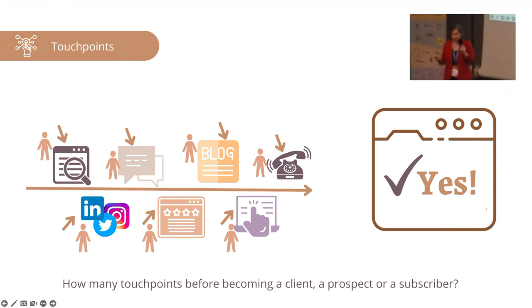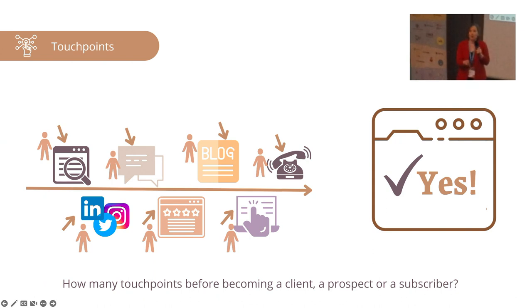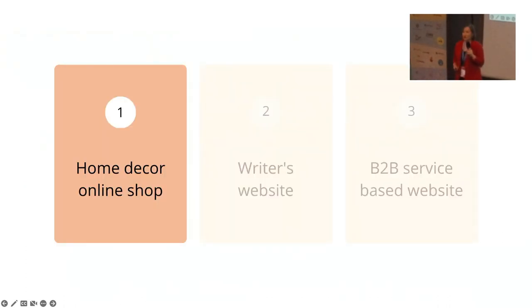How many touch points before a person gives you a yes — becomes your client, a subscriber, or a lead? On average, depending on the industry, it can take between six and eight touch points before a prospect becomes a client. The person needs to have some kind of contact with you six, seven, or eight times — either within your digital ecosystem or offline — before they give you a yes.